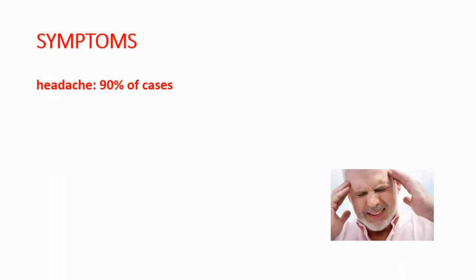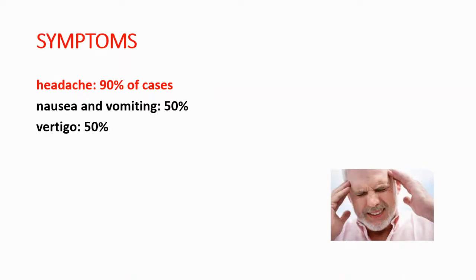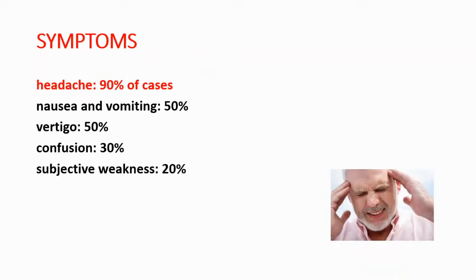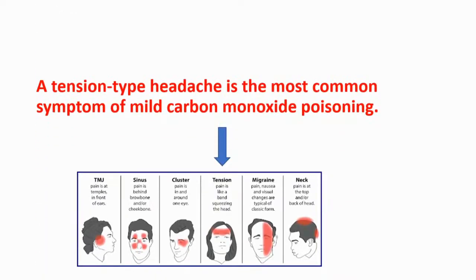Let's talk about symptoms. We can see headache in 90% of cases. We will see 50% of cases with nausea, vomiting, and also vertigo. We can see confusion in 30% of cases and subjective weakness in 20% of cases. A tension-type headache is the most common symptom of mild carbon monoxide poisoning.